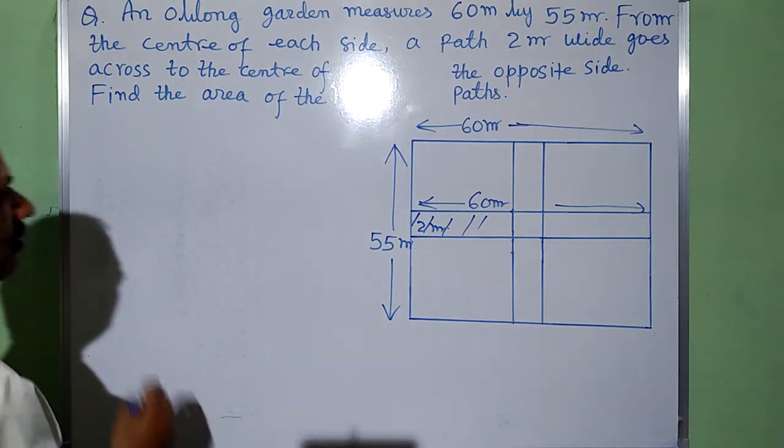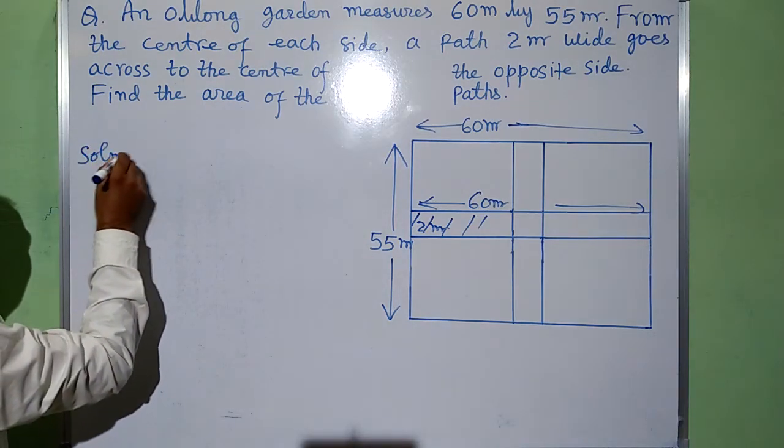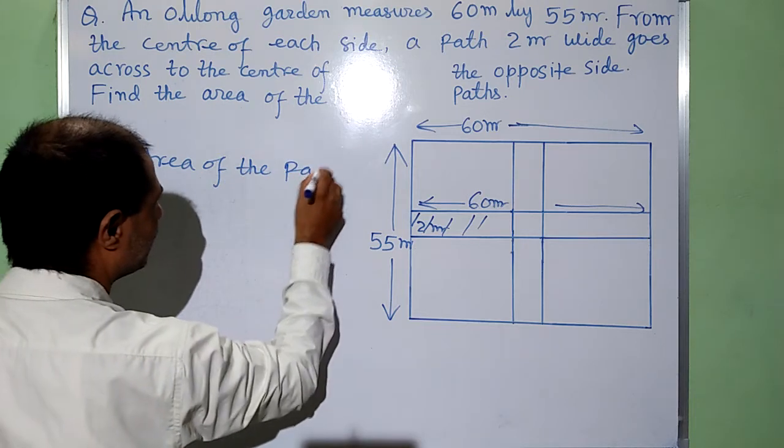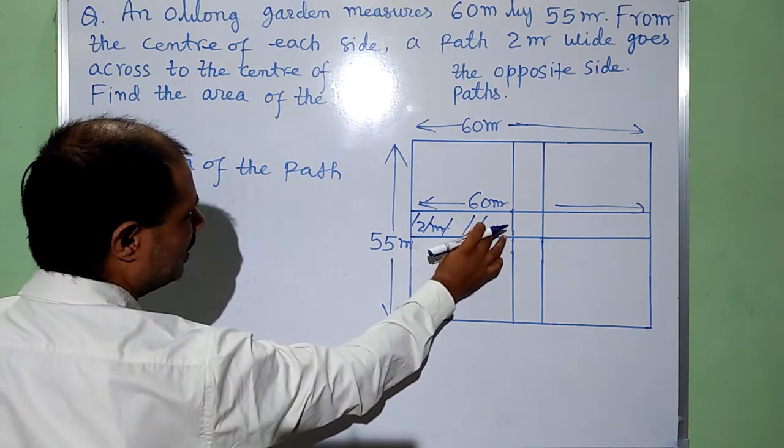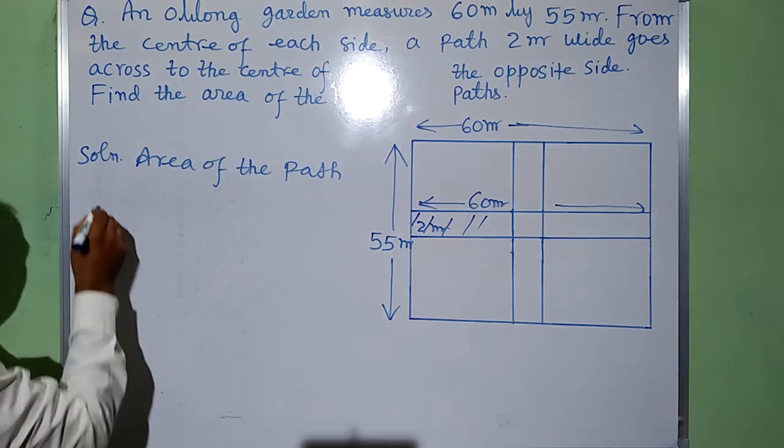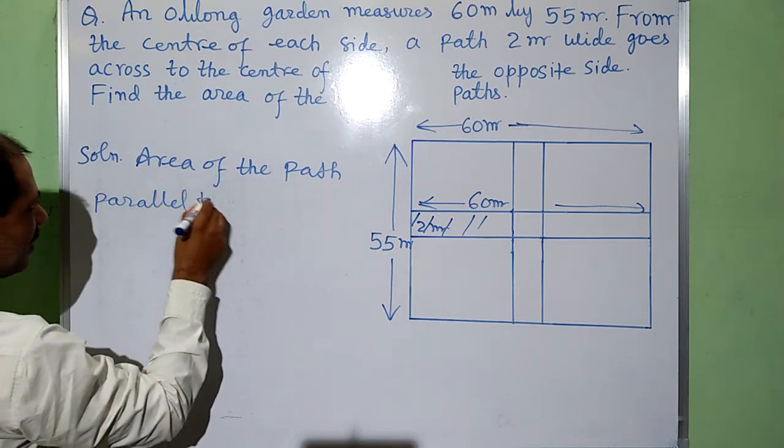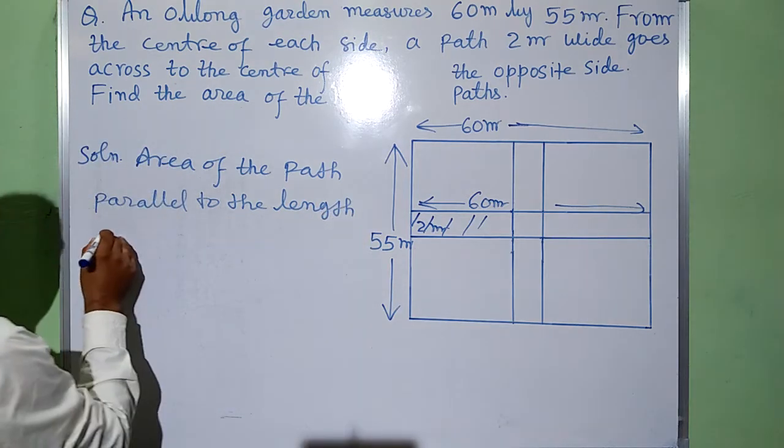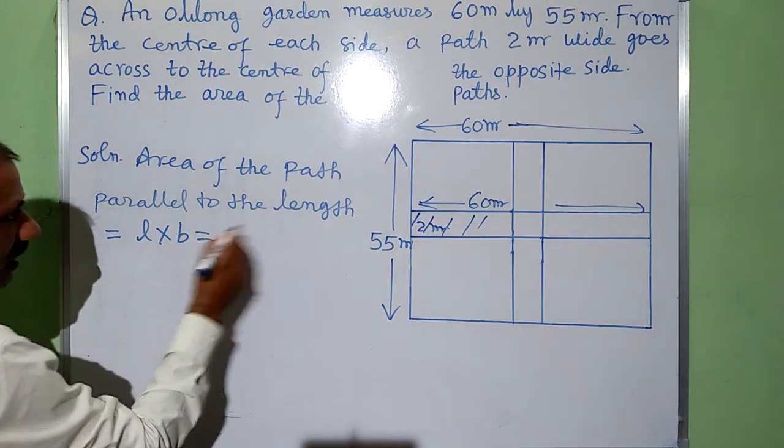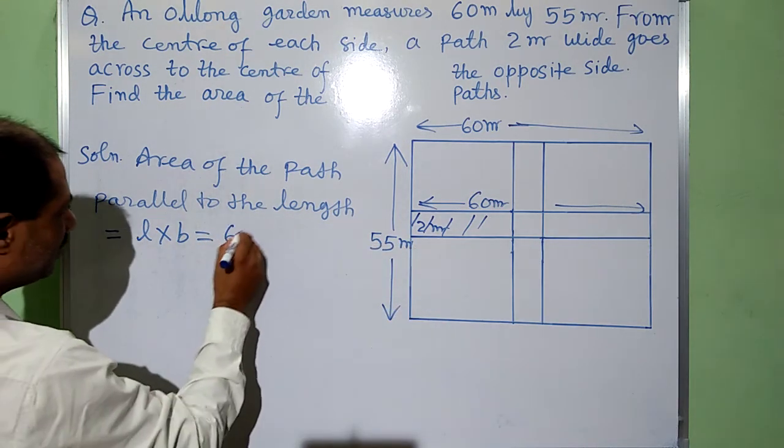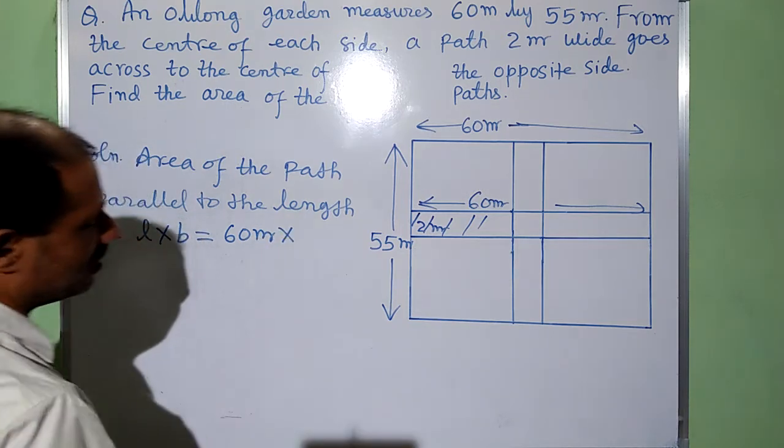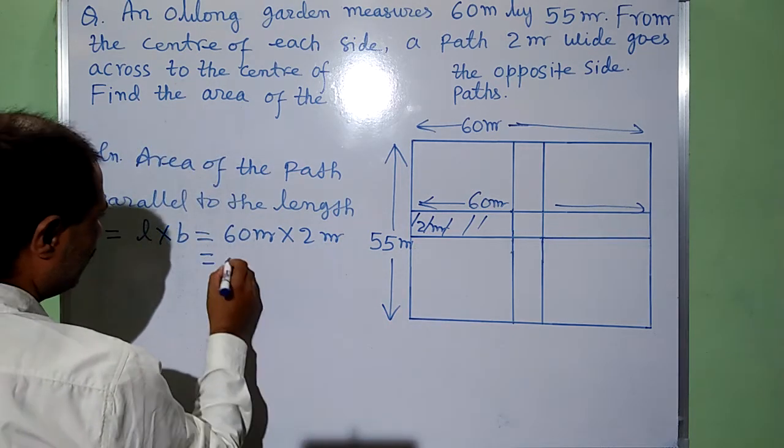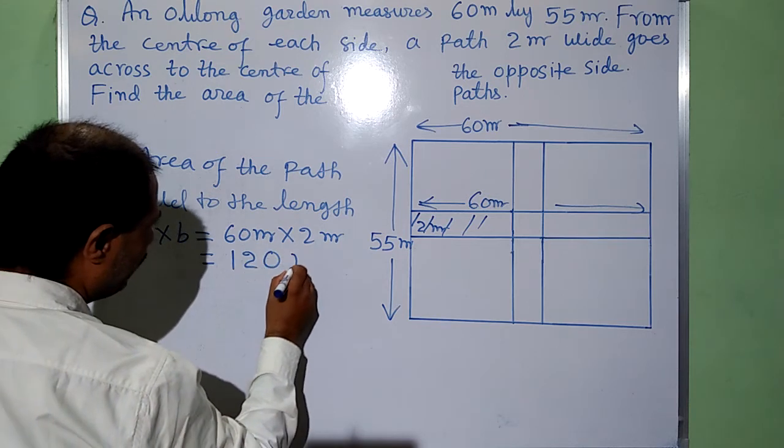Then area of this path. Solution: area of the path parallel to the length. Its area will be L into B. L of this path is 60 meter and breadth of this path is 2 meter. In this path, we have 60 times 2, that is 120 meter square.